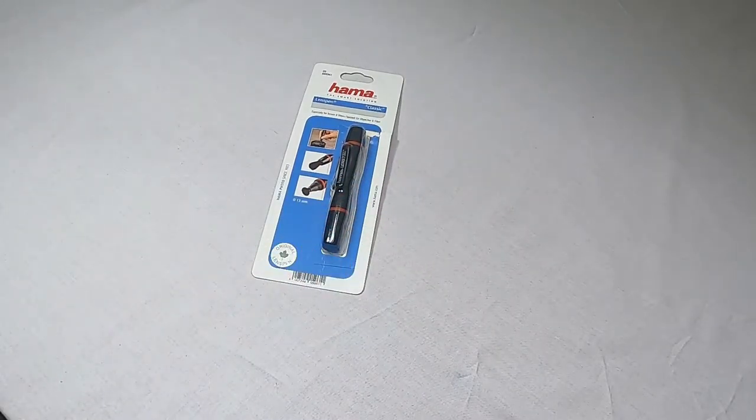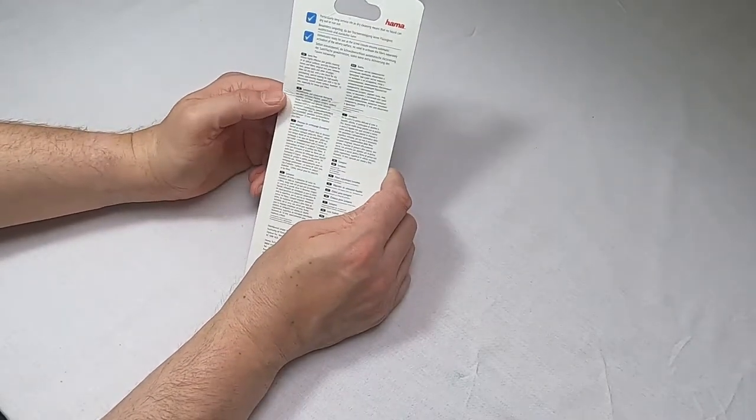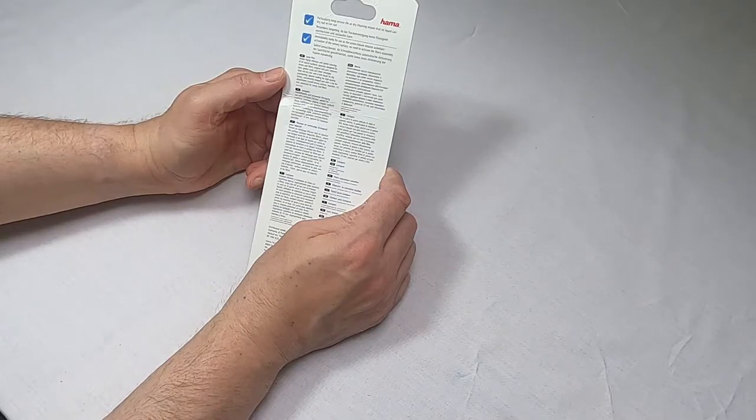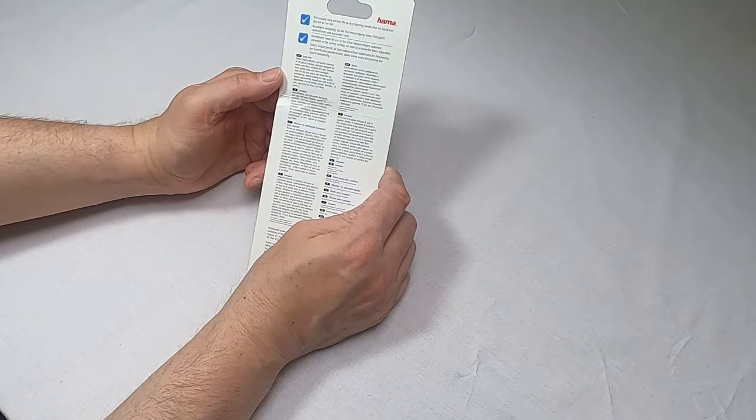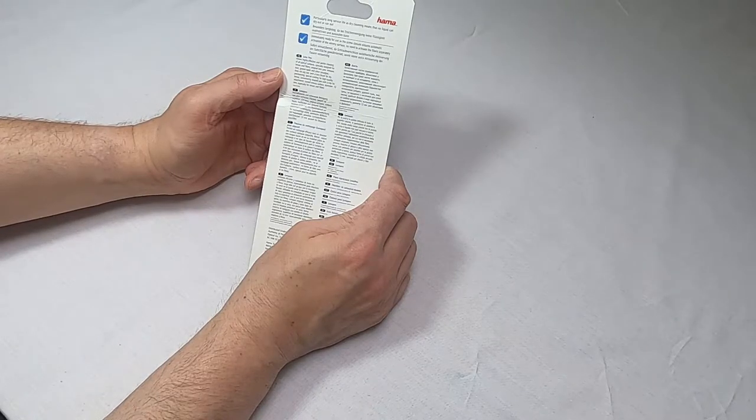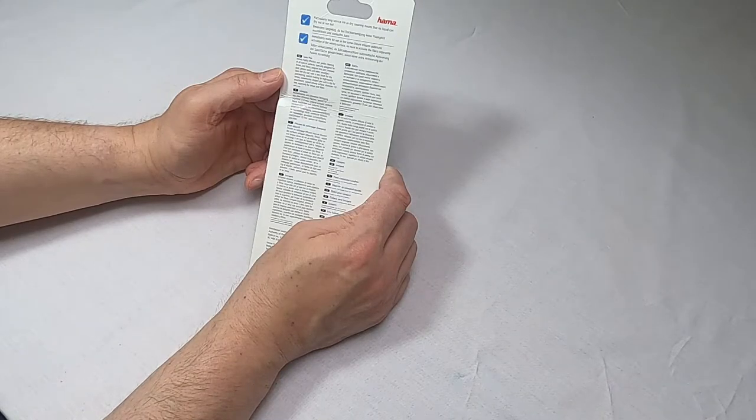This one I've partially opened just to make it a little bit easier to get out as part of the demonstration. On the back you've got some basic overviews, not really instructions. It's especially designed for lenses and filters, removes dust, grease spots, and other smudges, and it comes with a lens brush as well just to get any large particles off.